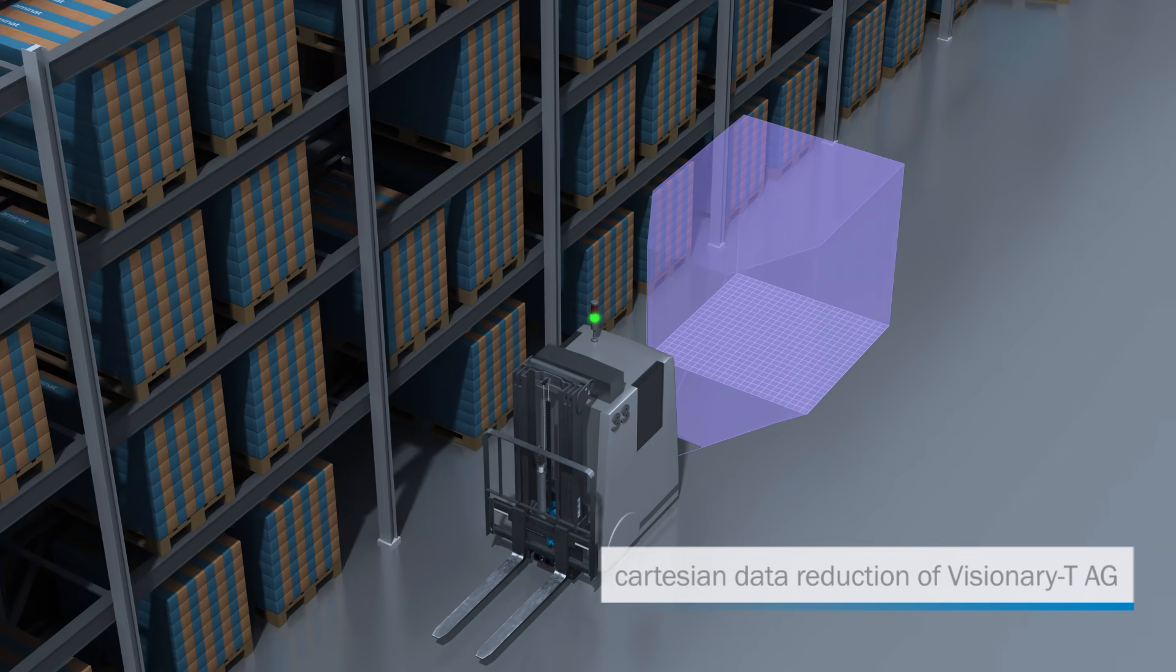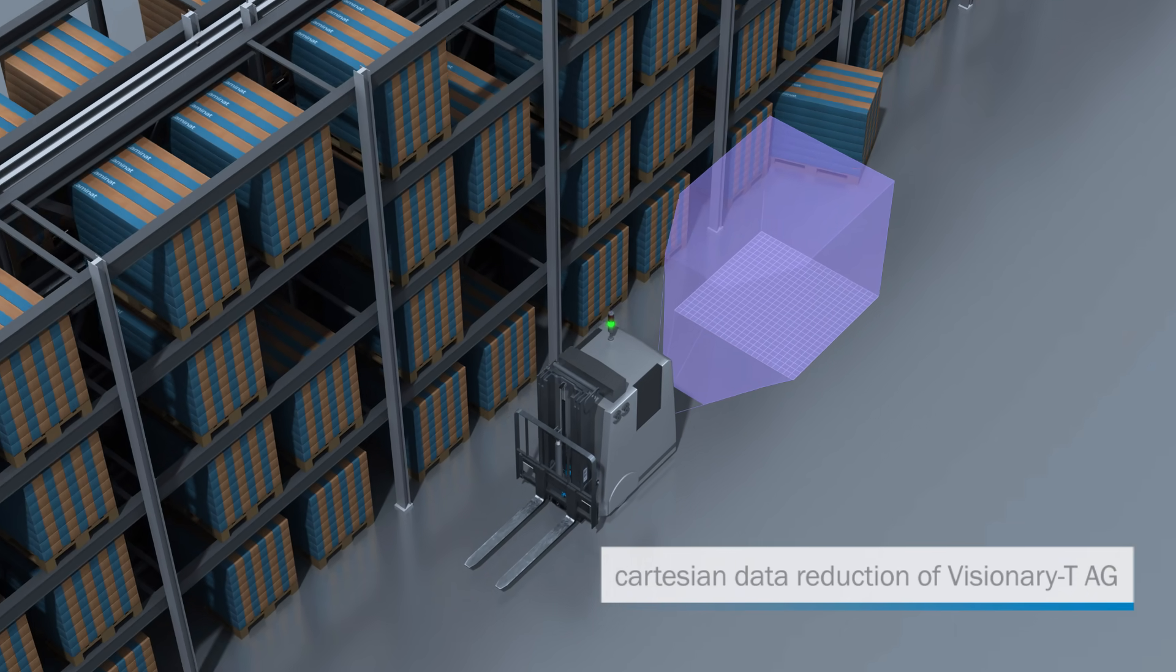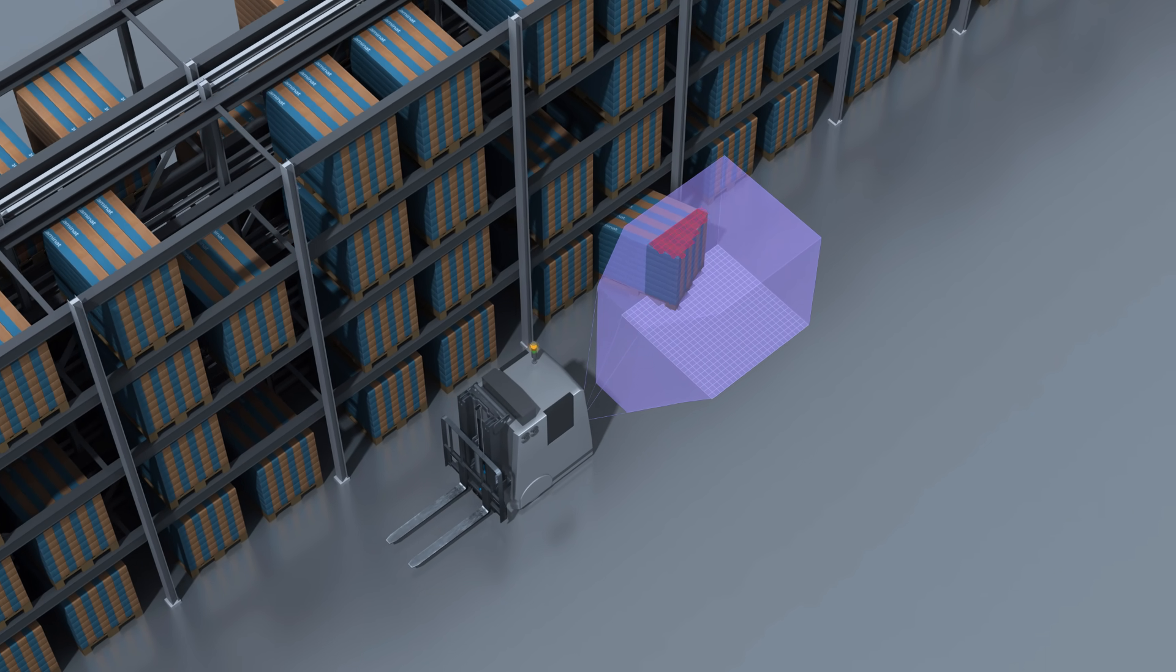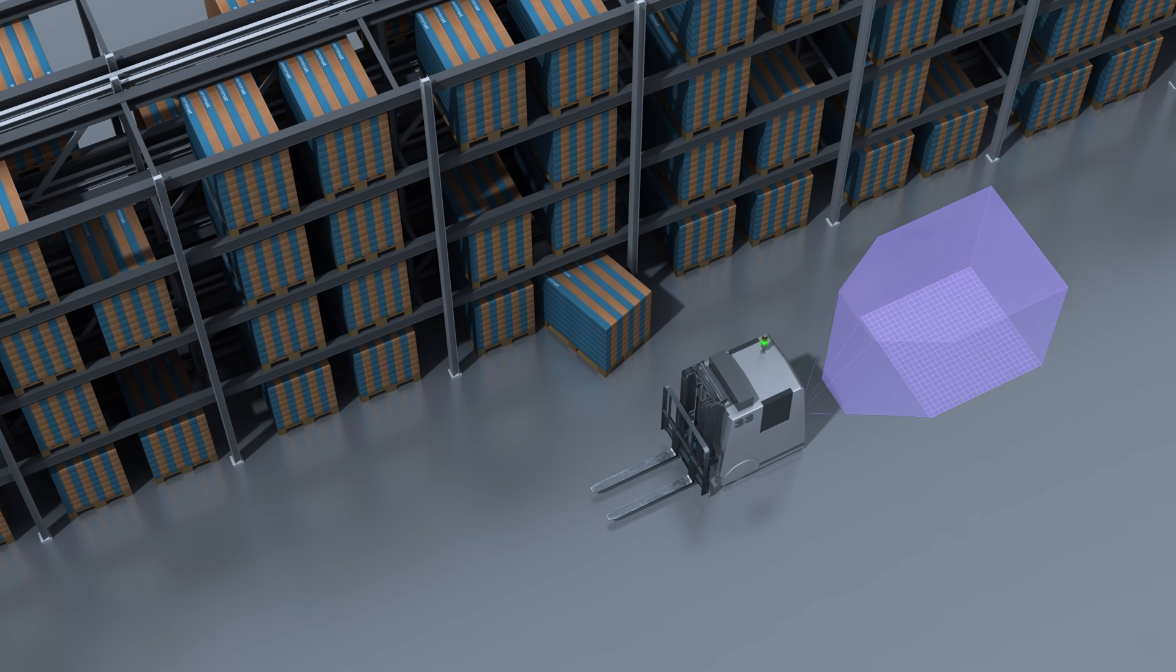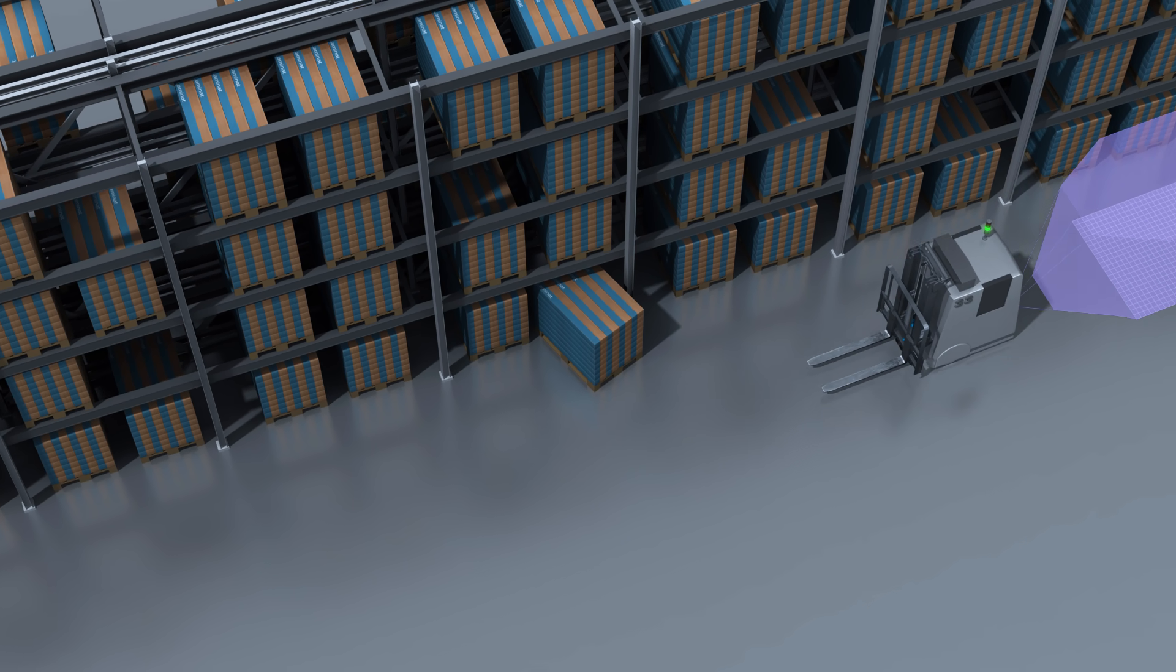Here, the Cartesian data reduction of Visionary T AGVs facilitates the integration by reducing the amount of data that needs to be processed. This way, obstacles can easily be detected and bypassed.